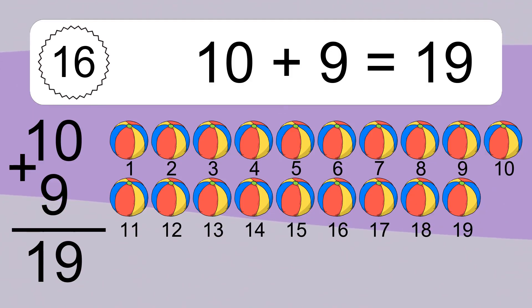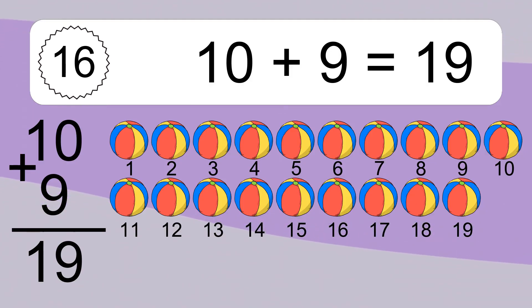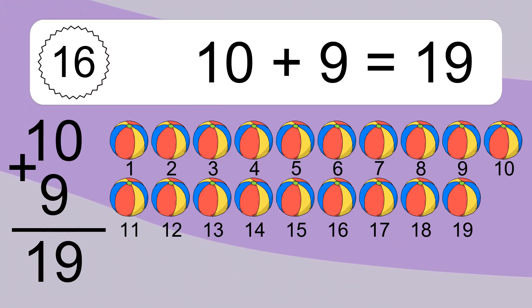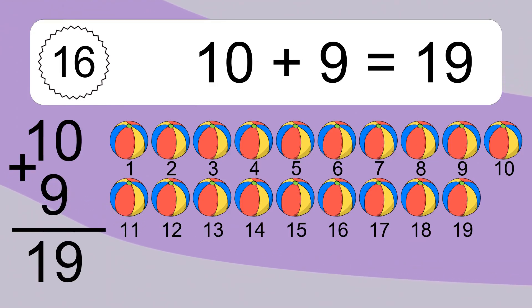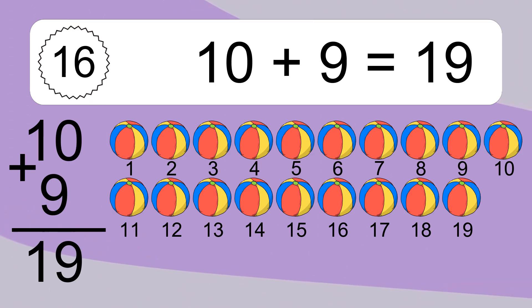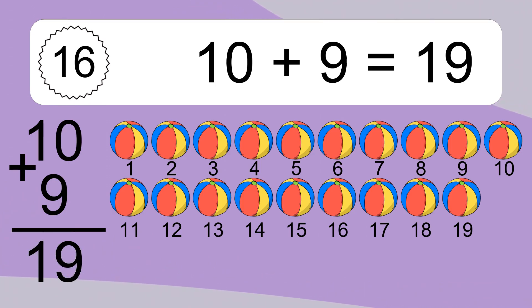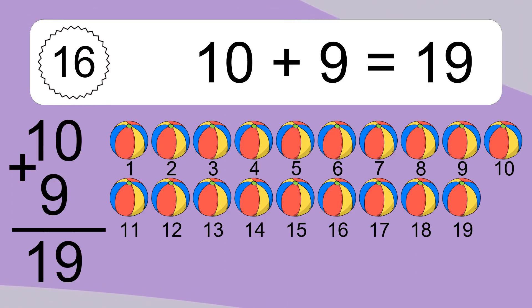Let's count it: 1, 2, 3, 4, 5, 6, 7, 8, 9, 10, 11, 12, 13, 14, 15, 16, 17, 18, 19.